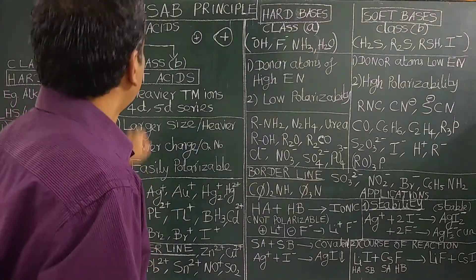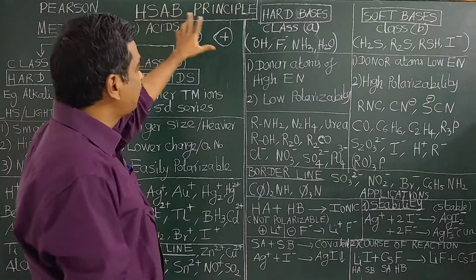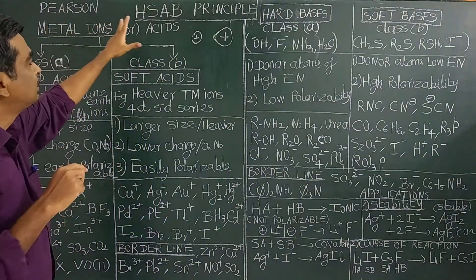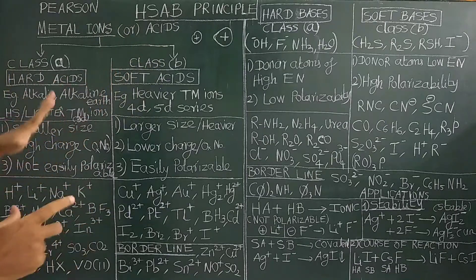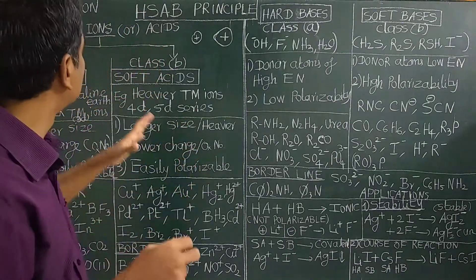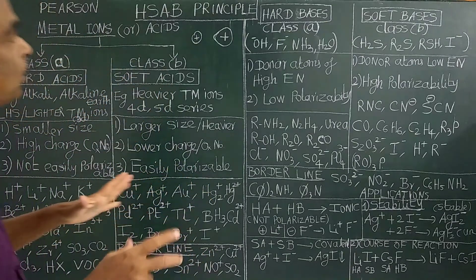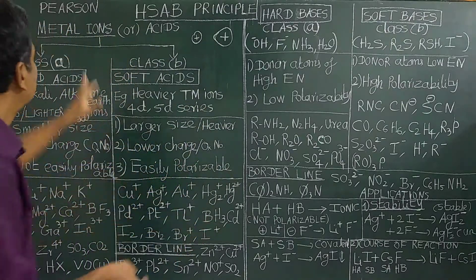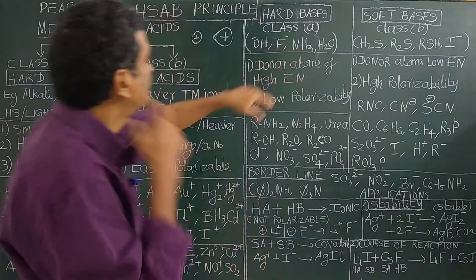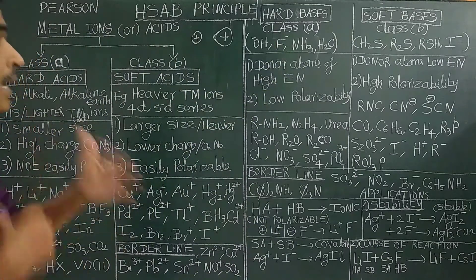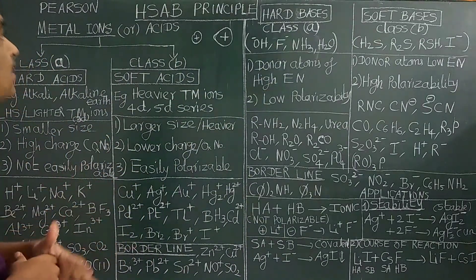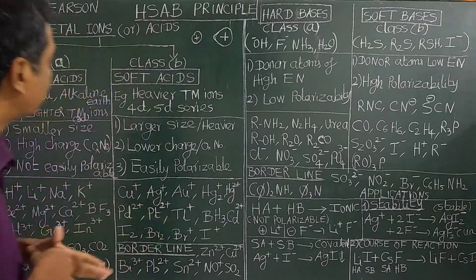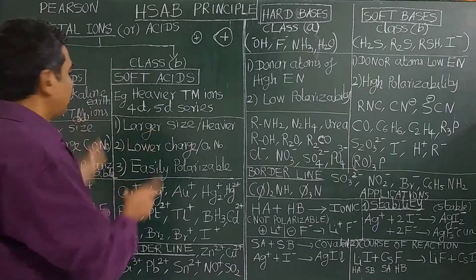I am going to show you the HSAB concept. This is the HSAB concept. He proposed this simple rule based on the stability of the complex compounds formed between metal ions and ligands. He extended the acid-base concept and proposed the HSAB principle based on simple rules.